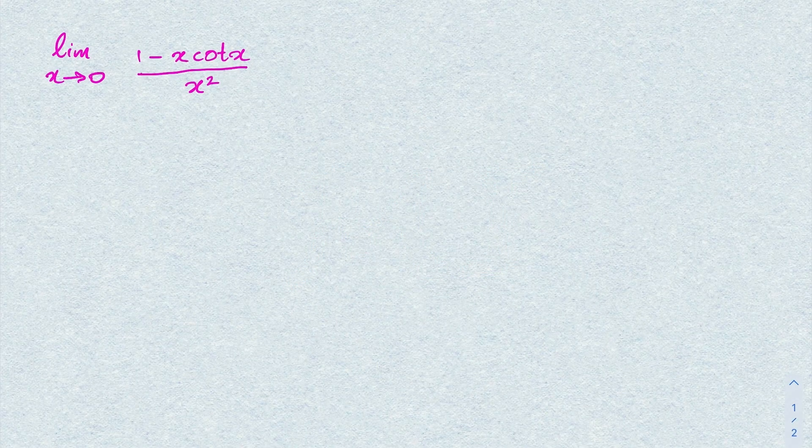Hello everyone, welcome to the mathematics channel. In this video we are going to solve this beautiful limit: the limit as x approaches 0 of (1 minus x times cotangent of x) over x squared.